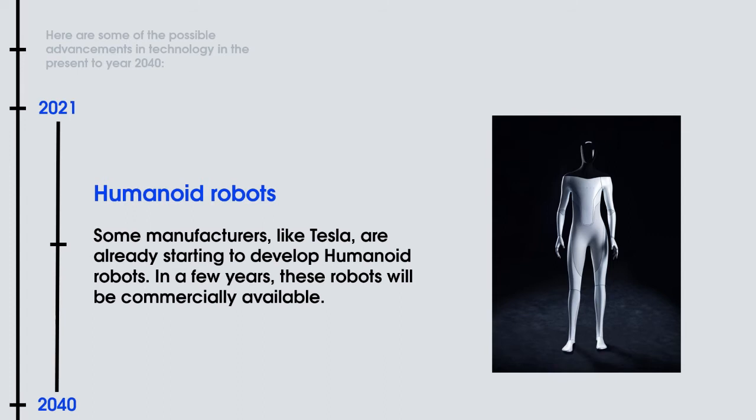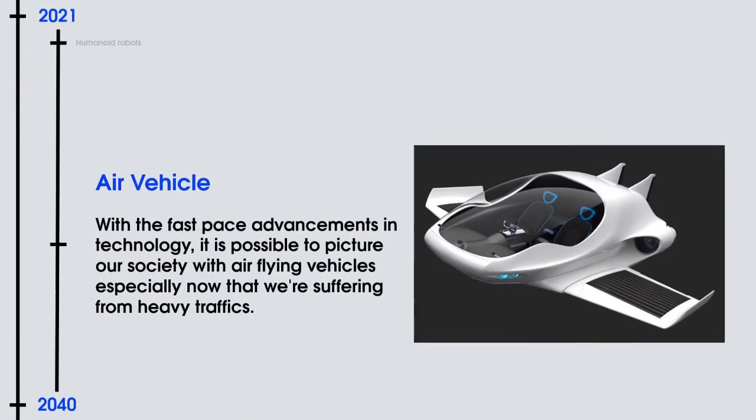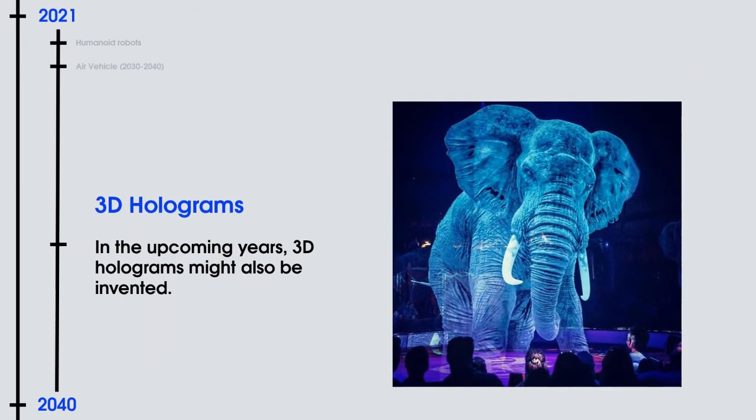In a few years, these robots will be commercially available. Air Vehicles — with the fast-paced advancements in technology, it is possible to picture our society with air-flying vehicles, especially now that we're suffering from heavy traffic. 3D Holograms may also be invented in the upcoming years.